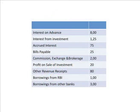Moving to the credit side: interest on advances is 8 lakhs and will go in schedule 13 as income. Interest from investment is also an income portion and will go in schedule 13. Accrued interest 75,000 is a schedule 5 item. Bills payable 25,000 is also part of schedule 5. Commission, exchange and brokerage goes in schedule 14 for 2 lakh rupees. Profit on sale of investment 20,000 goes in schedule 14. Other revenue receipts 80,000 are again part of schedule 14. Borrowings from RBI and borrowings from other banks — 3 lakh — both go in schedule 4.